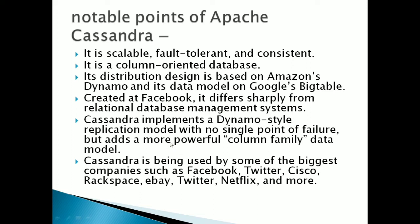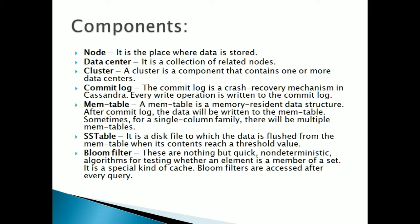Cassandra implements a Dynamo-style replication model with no single point of failure, and adds a column family data model. It is used nowadays by big companies such as Facebook, Twitter, Cisco, eBay, Netflix, and Rackspace. In our daily lives we use Twitter and Netflix, often unaware that Cassandra is the database storing their large amounts of data.